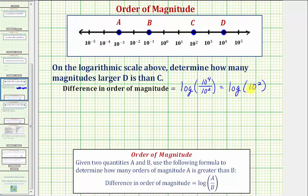So because this quotient is ten squared, this tells us that ten to the fourth is ten to the second, or a hundred times larger than ten to the second. The value of this common log gives us the difference in the order of magnitude. Now we could just type this in the calculator, but because this is common log and we have ten to the second, let's evaluate this by hand.